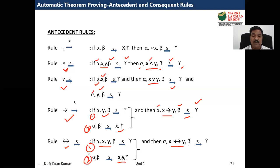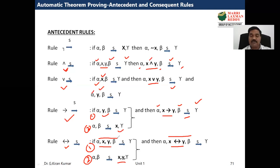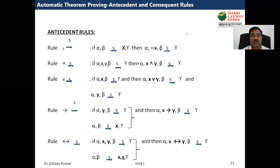For bi-implication before the logical sequence — x bi-implies y — write x comma y once on the left side, and x comma y once on the right side, giving two formulas. Remember all these rules from right to left. So these are the five antecedent rules: NOT, AND, OR, implies, and bi-implies present before the logical sequence.